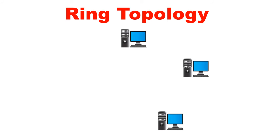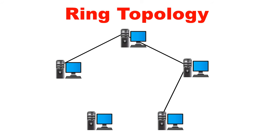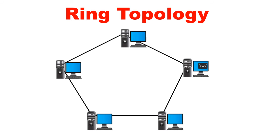What is ring topology? In ring topology, each computer is connected with two other computers on either side of it, with two dedicated point-to-point connections. All the computers are connected in a ring formation, which is why it is called ring topology. When a computer wants to send data to another, the data moves in only one direction. Each computer has a repeater; if the received data is not intended for that computer, the repeater forwards the data to the next computer until it reaches the intended destination.